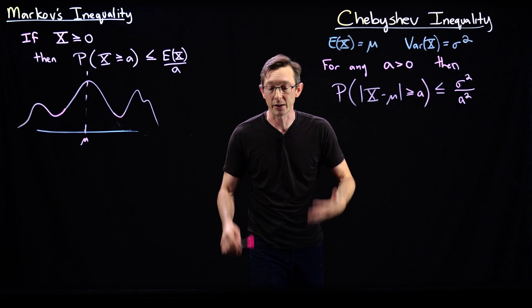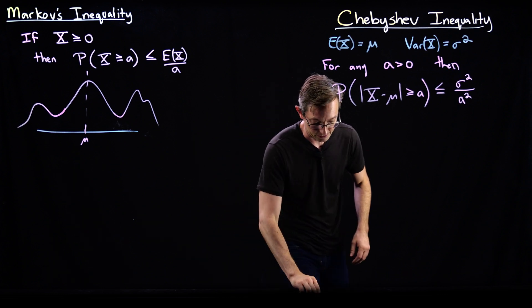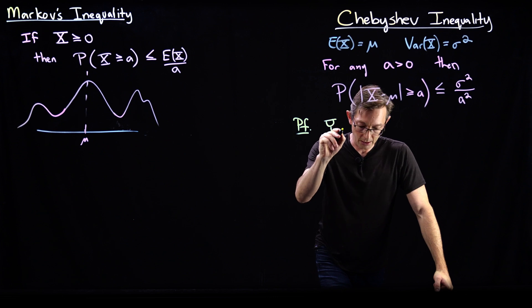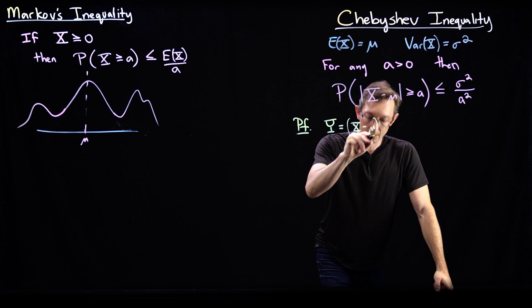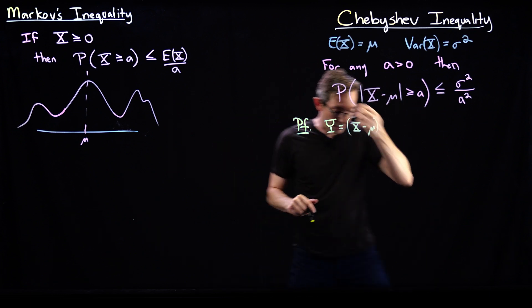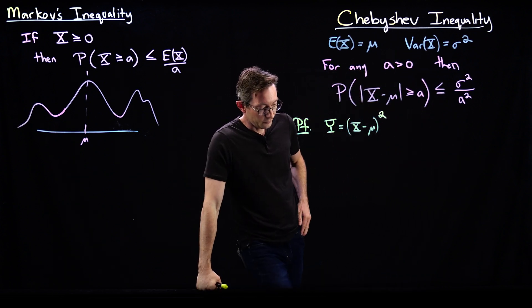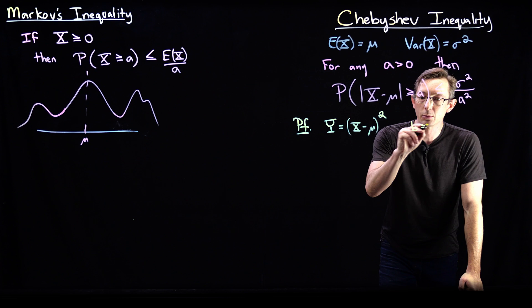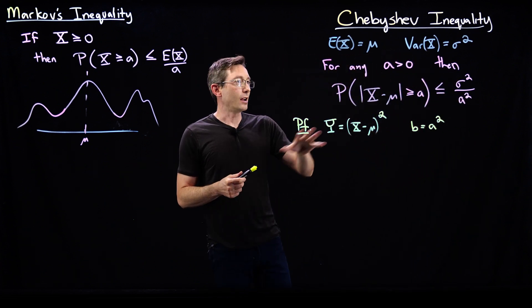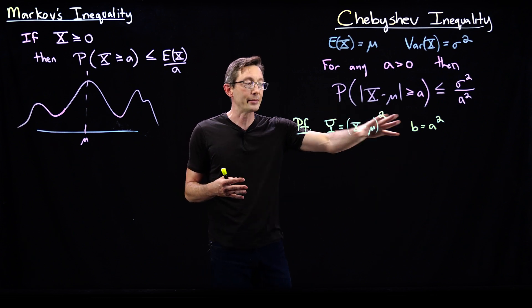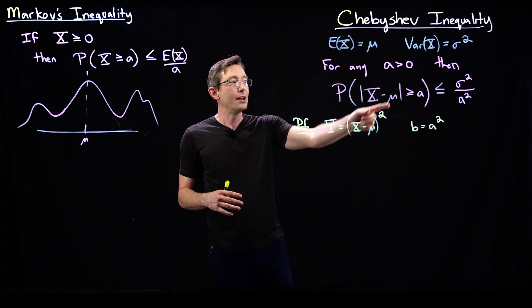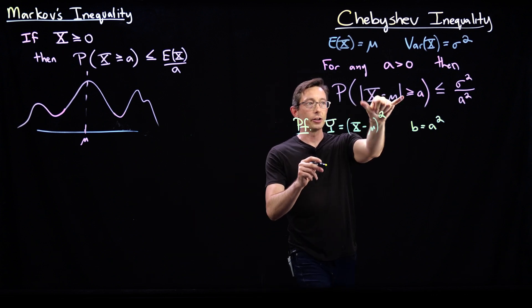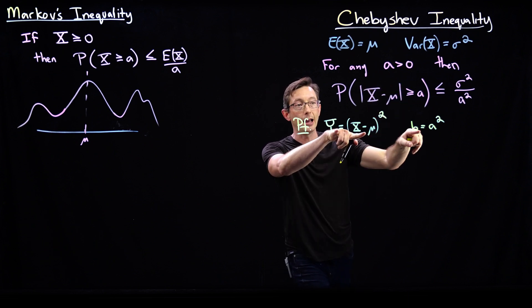We're going to work through proving it, and then talk through why this might be the case. We're going to introduce a new variable y = (x − μ)², and define b = a². There's going to be an a² popping out. This proof makes some substitutions that are convenient but non-obvious — it's not obvious why you would do this. So y is going to be this random variable, and we're going to try to relate the probability in question to a probability in terms of y and b.